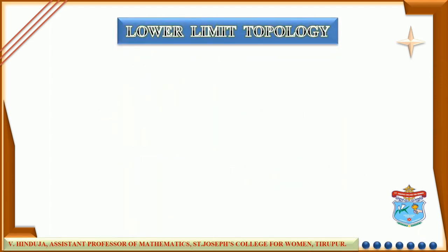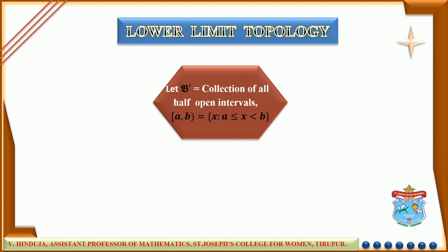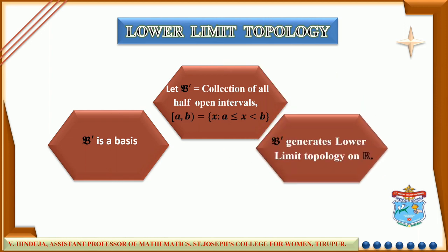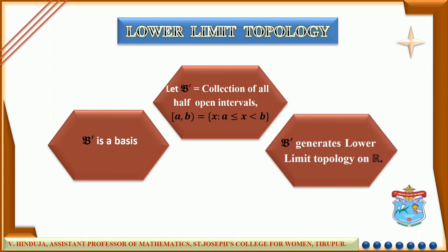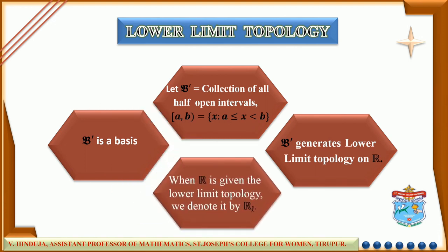Next, lower limit topology. Let us consider a collection, say script B', of all half-open intervals of the form [a, b), which is closed at a and open at b. Then this collection is a basis. The topology generated by this collection script B' is called the lower limit topology on the real number set R. When R is given the lower limit topology, we denote that R by R_L.